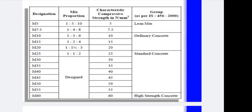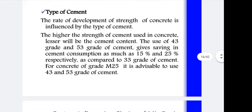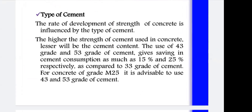The second factor influencing mix design is cement. The rate of development of strength depends upon the cement. The higher the strength of cement, the lesser will be the cement content required. Using OPC 43 grade or OPC 53 grade gives cement consumption savings of 15 to 25 percent compared to OPC 33 grade. Therefore, OPC 43 and OPC 53 are preferred as they give more cement efficiency.